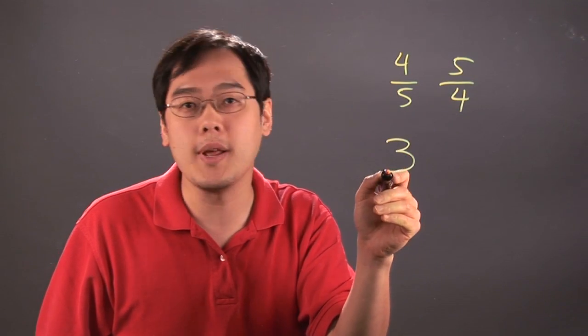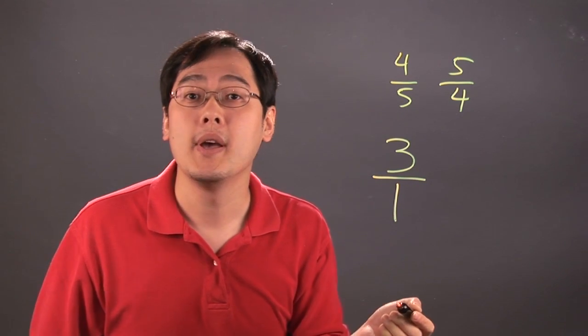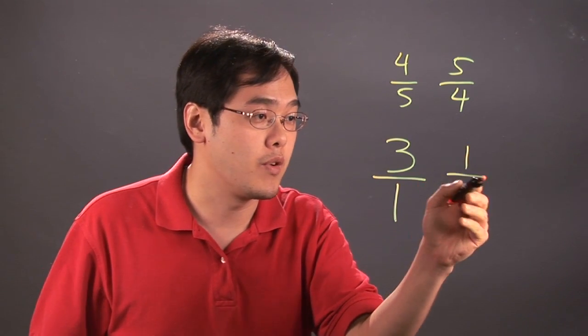And even if you have a number 3, you can think of any whole number as that number over 1, and rewrite it as a fraction that way. And the reciprocal of that fraction would be 1 over 3.